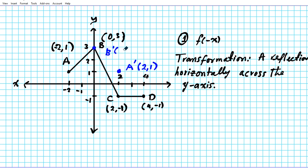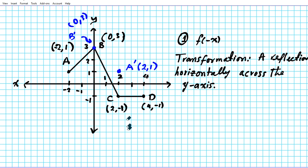B prime will also have the coordinates zero, comma three. Next, point C is two units to the right — remember we're counting by twos. So if we reflect horizontally across the y-axis it's going to end up two units to the left. This would be point C prime.